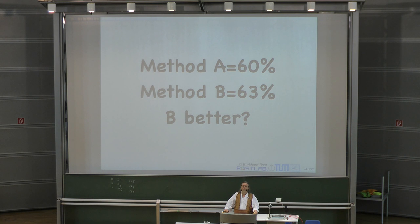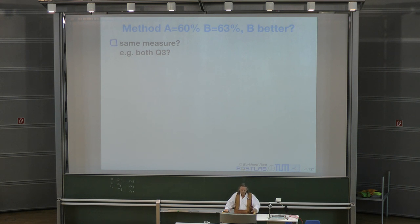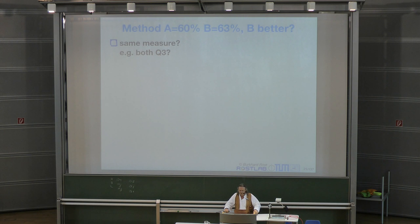Because there are a couple of questions you have to ask first. The simplest one is: are they actually both computing the same value — the same Q3? Let's assume that is the case. You would be surprised how many papers compare different values. And in some sense, that is the part that you already answered.